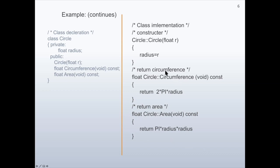Notice here that we have slash-star, and at the end we have star-slash — whatever is written between these two is an explanation. It is called a comment. Also another comment is here. As necessary, we may write some comments inside the code.